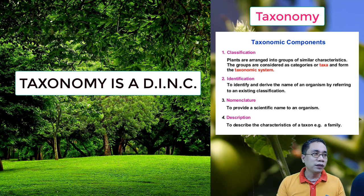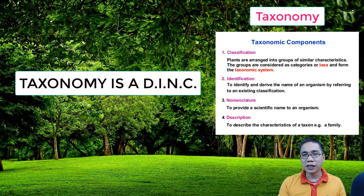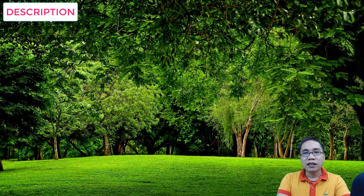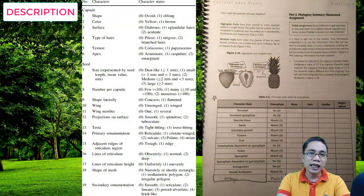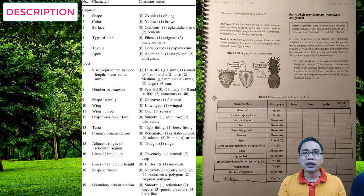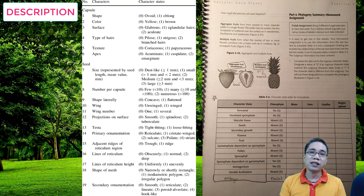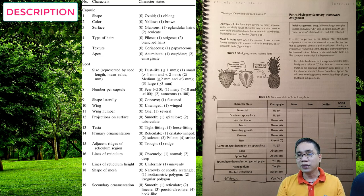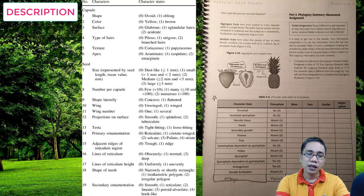Now, the goal of taxonomy is to group organisms into classification units called taxa, or taxon. Description has something to do with assigning features, attributes, or generalized traits to a taxon. That means you belong to the group because you possess similar characteristics. These are technically called characters, and they can exist in various alternative versions called character states.